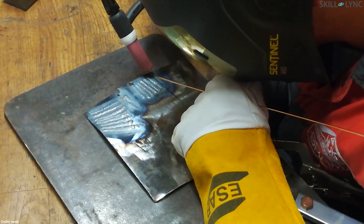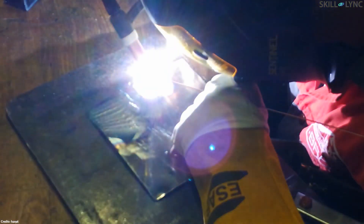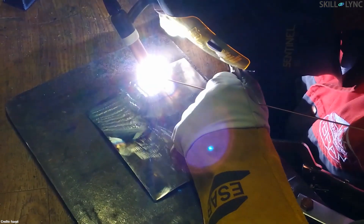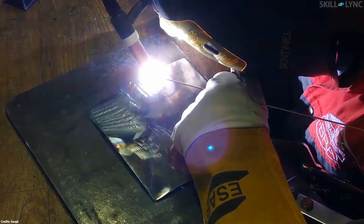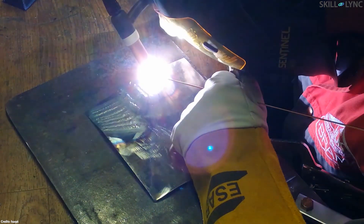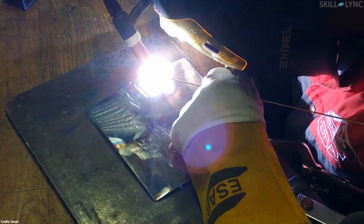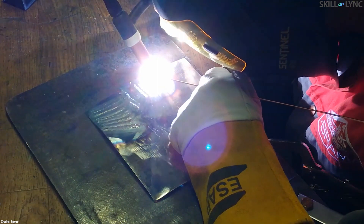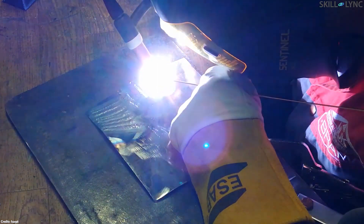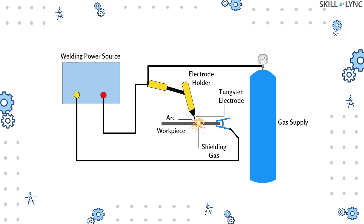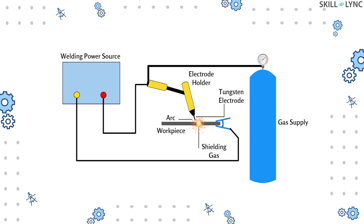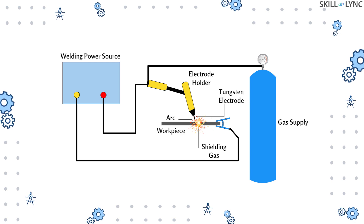TIG welding is mostly used to weld thin sections of stainless steel and non-ferrous metals such as aluminium, copper, and magnesium. It is much easier to control the TIG welding process compared to other welding procedures like shielded metal arc welding and gas metal arc welding. The construction and components used for TIG welding are somewhat similar to those used for manual metal arc welding.